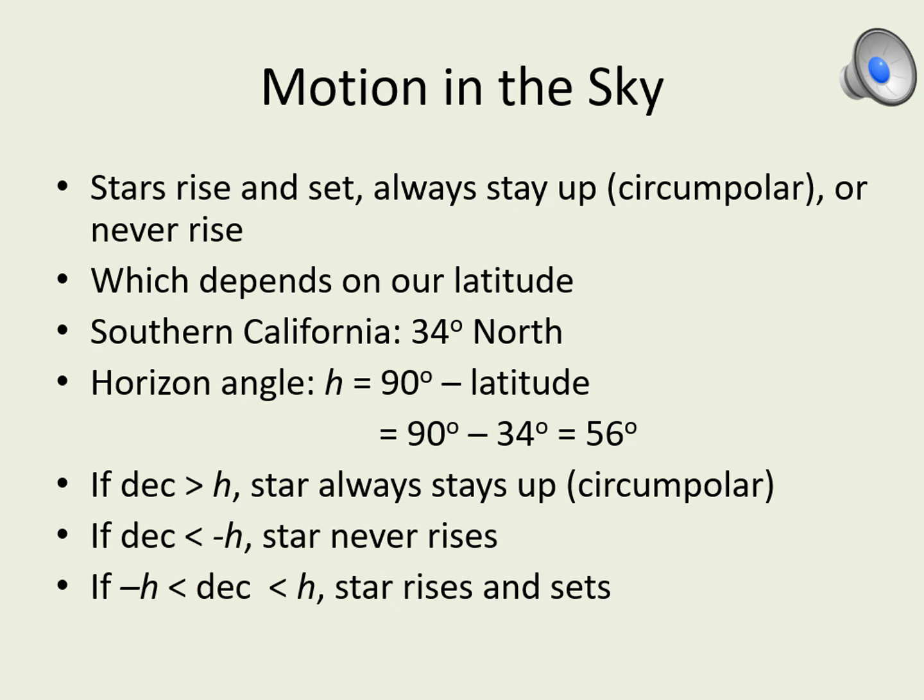For many constellations, all the stars will be in the same category. If that's the case for yours, you can give the range of declinations and simply say they all fit in the given category. On the other hand, if your constellation has some stars in one category and some in another, then you should say which stars are which type and give the declination values that tell you that.